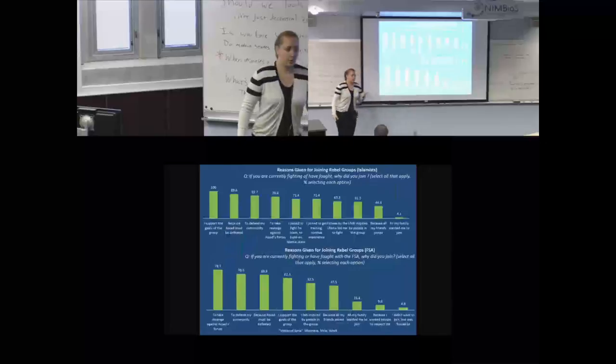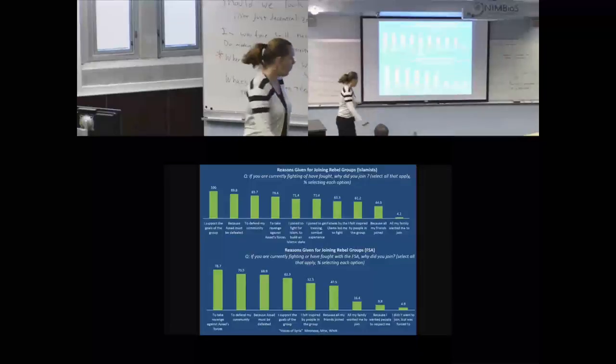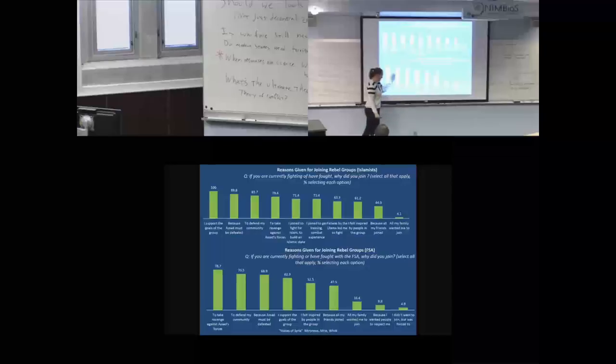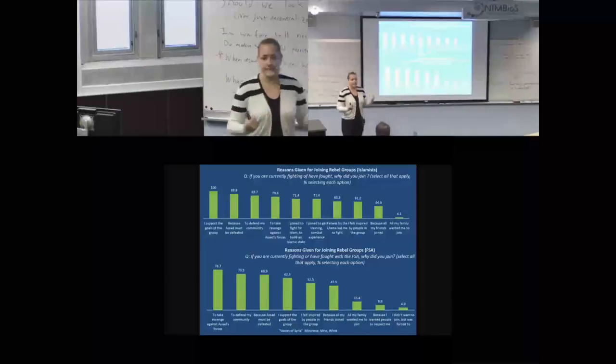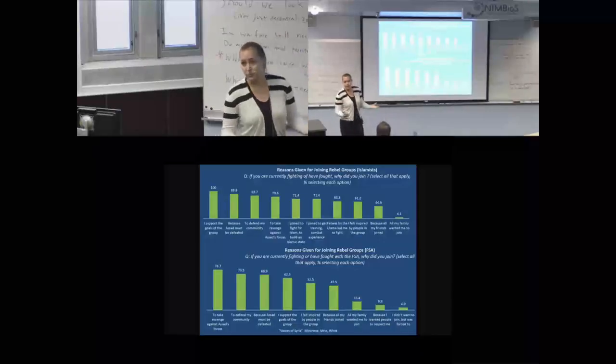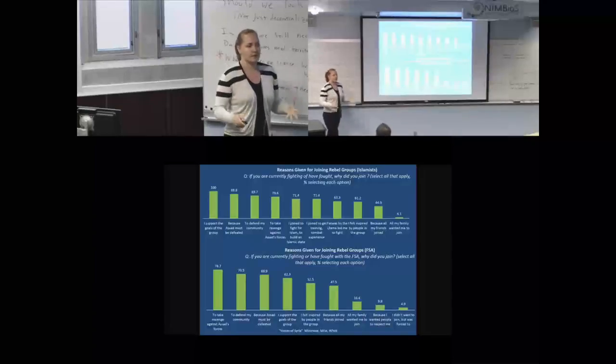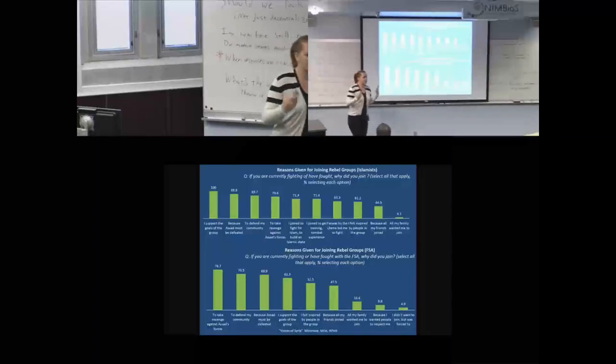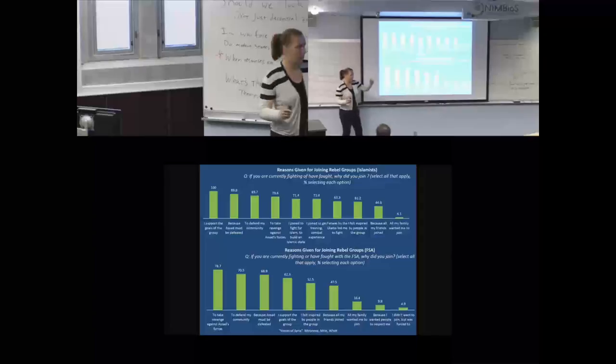So why did other people join? I want you to first look here. Here are moderate brigades, FSA. Why did they join? To take revenge against Assad, to defend the community, and because Assad must be defeated. Very emotionally loaded. The word revenge is rather emotional to me. And it's their main idea why they joined. Because on revenge, they're scoring way more than civilians. They joined for the goal. They would be like, I'm going to die for this goal.